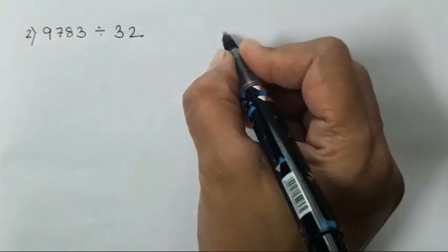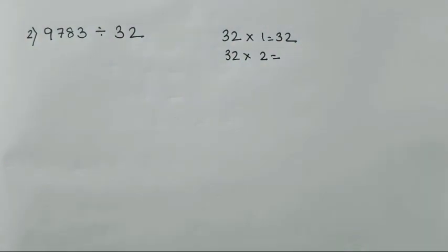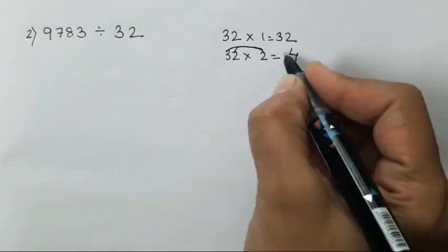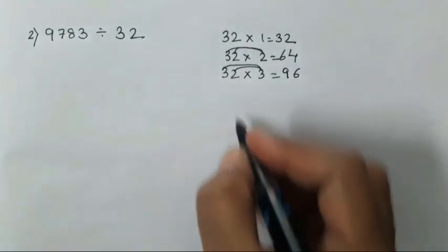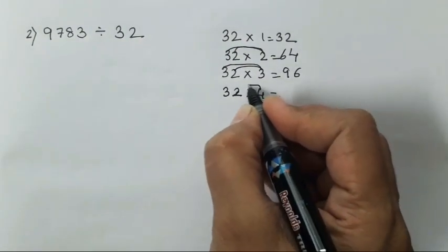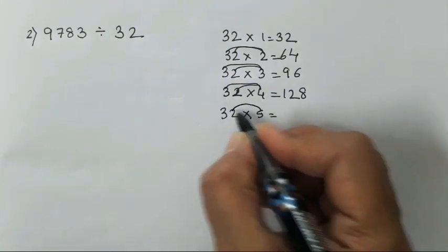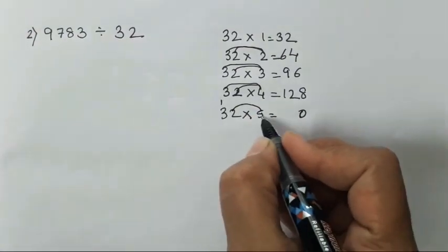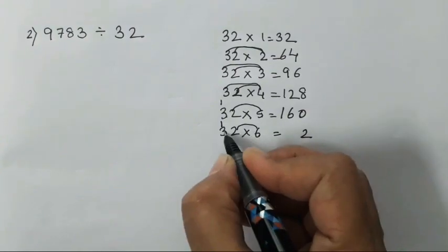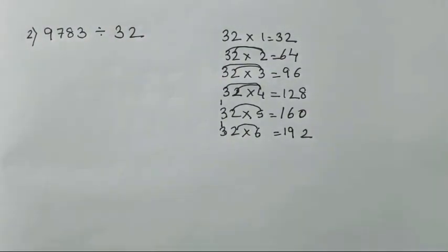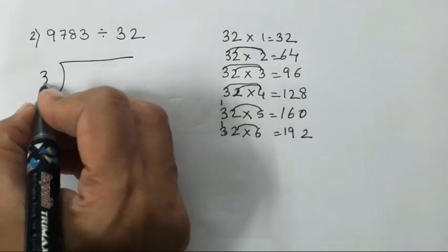Again, first write the table of 32. I'll show you the easiest way: 32 times 1 is 32; times 2 — two twos are 4, two threes are 6 — so 64; times 3 — three twos are 6, three threes are 9 — so 96; times 4 — four twos are 8, four threes are 12 — so 128; times 5 — two fives are 10, carry 1, five threes are 15 plus 1 is 16 — so 160; times 6 — six twos are 12, six threes are 18 plus 1 is 19 — so 192. We'll write up to 6 for now.